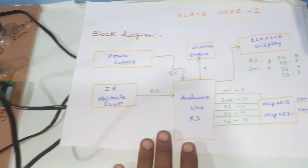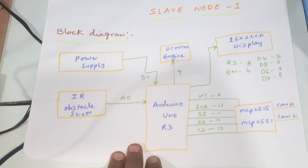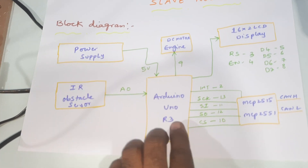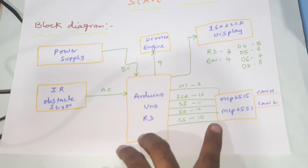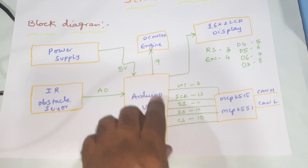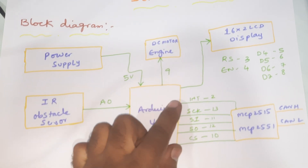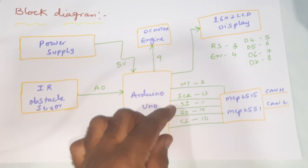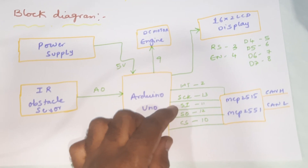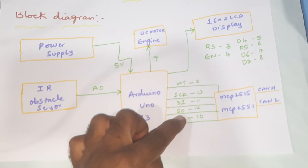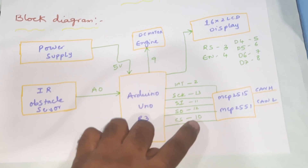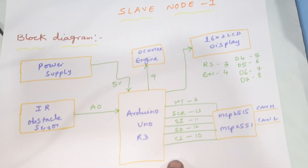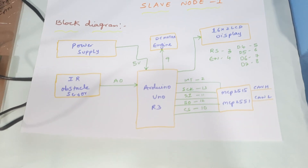In the block diagram, the engine is connected to pin 9, the IR obstacle sensor is connected to A0, and the Arduino is connected to the MCP2515 and 2551 module. The interrupt pin is connected to pin 2, clock to pin 13, MOSI to pin 11, MISO to pin 12, and chip select to pin 10. This uses SPI protocol. LCD connections: RS, Enable, D4, D5, D6, D7 on pins 2 through 8.